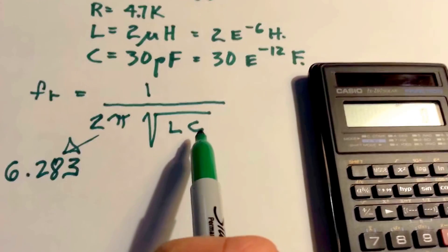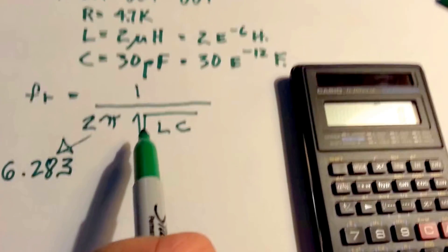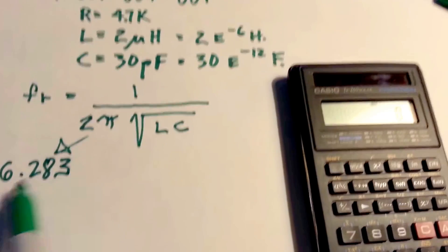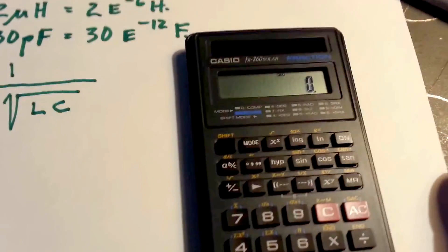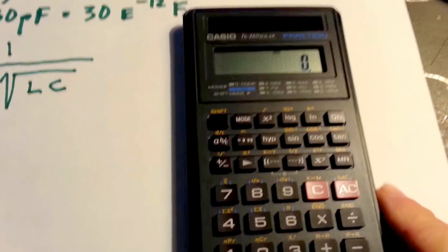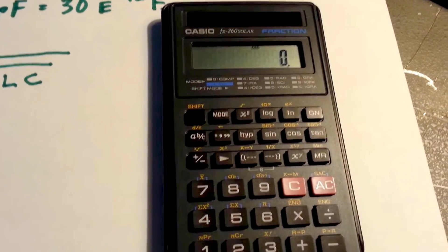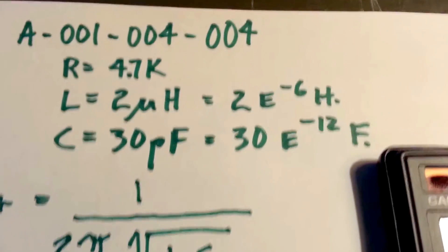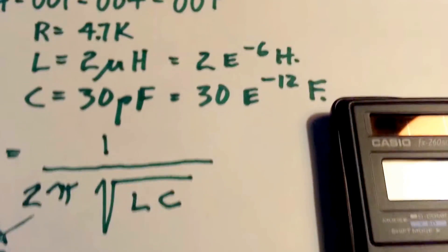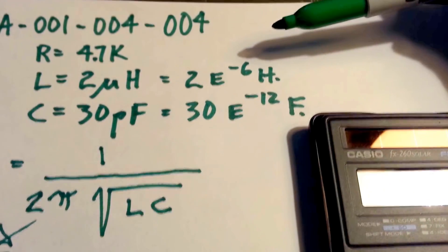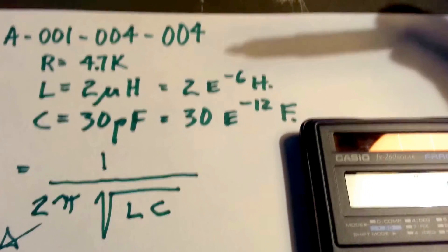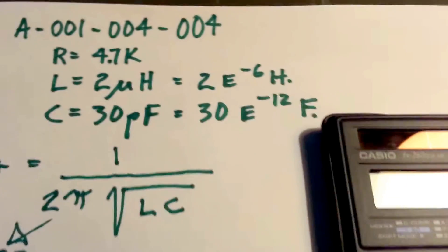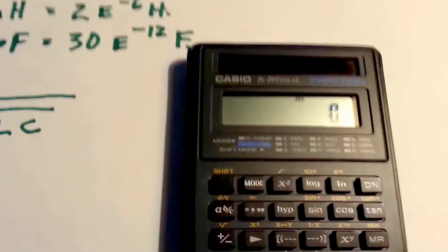First thing I'm going to do is multiply L and C, then take the square root. Multiply by 6.283, and then take the reciprocal. That's the easiest way to do it. 2 times 30 is 60. And a negative 6 exponent and a negative 12 exponent will give you a negative 18. You just add those exponents.